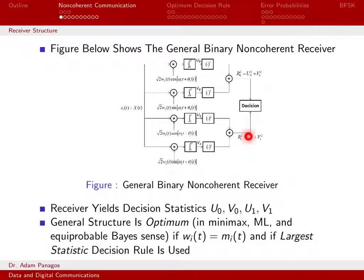Comparing R0 squared to R1 squared lets us choose our decision. And intuitively, we think we know what should happen. When you send S0, R0 squared should be big and R1 squared should be small, and you should decide R0 squared is the big one, so S0 was sent. If S1 of T was sent, then R1 squared should be large relative to R0 squared, and we should decide that S1 of T was sent. So this is the structure.